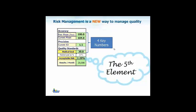Risk management adds the fifth element to quality control. I've taught quality control for decades, and I've always taught that there are four key numbers that drive quality: the true value, the current mean that you use to calculate accuracy, the SD that drives precision, and the allowable error limit or the medical goal. But now you add acceptable risk.